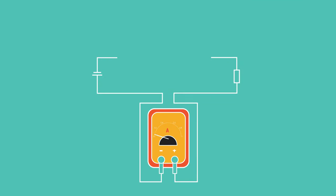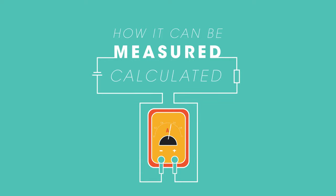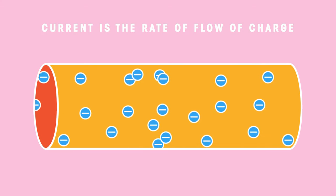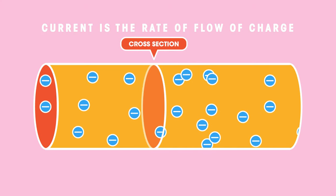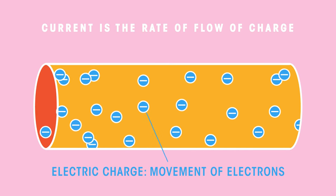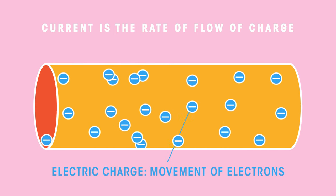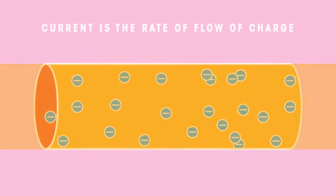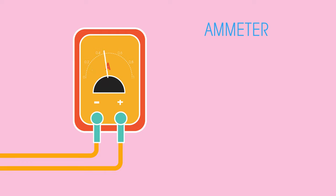So what is current? In this video we're going to look at what current is in electricity, how it can be measured, and how we can calculate it. Current is the rate of flow of charge through a cross-section of an electrical conductor. Electric charge can also be thought of as movement of electrons.